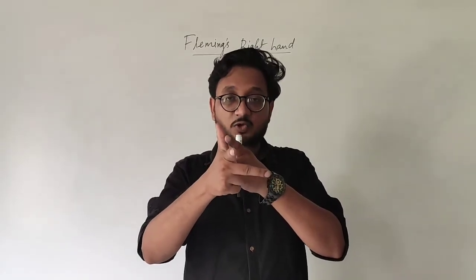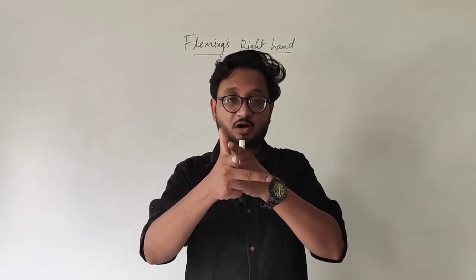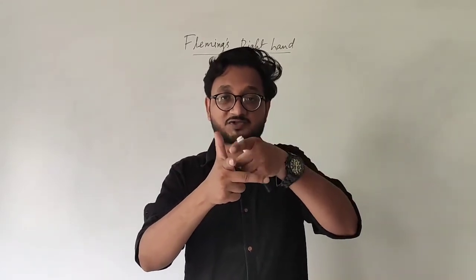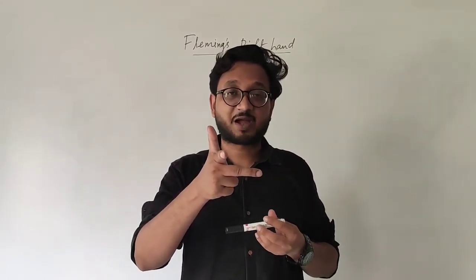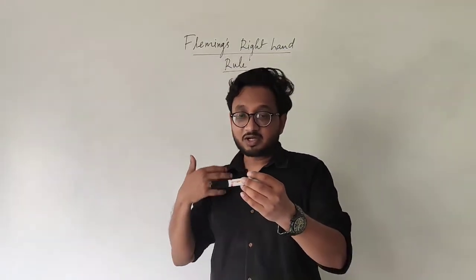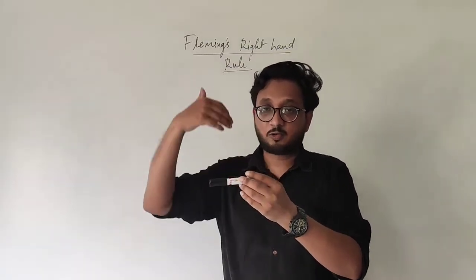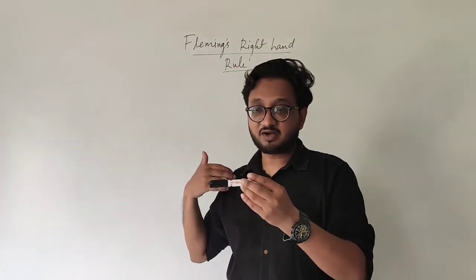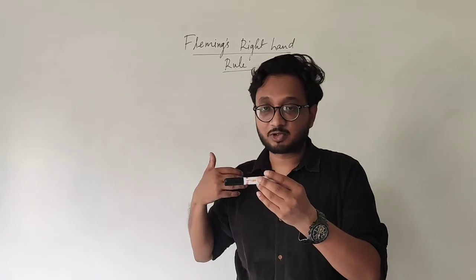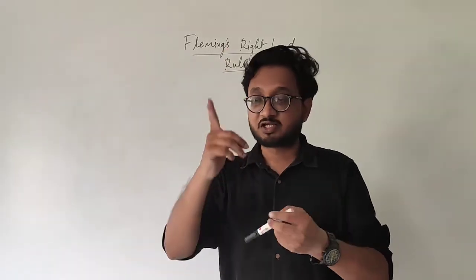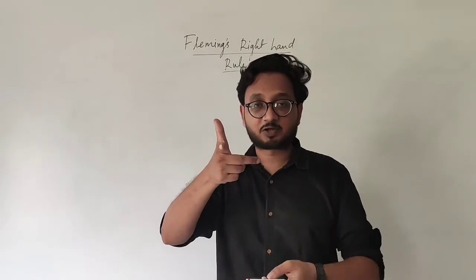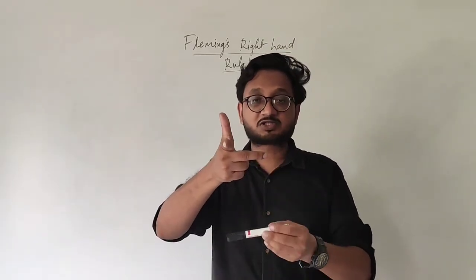The thumb once again shows us the direction of the motion — in which direction you are moving. The first finger shows us the direction of the magnetic field lines. So, suppose over here there is north and over there there is south. The magnetic field lines are moving from north to south, and that is shown by the first finger pointing towards the camera. The thumb shows the direction of motion.